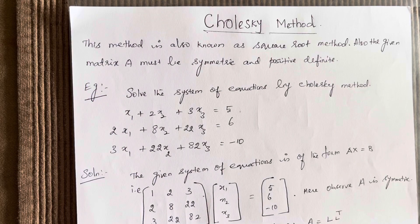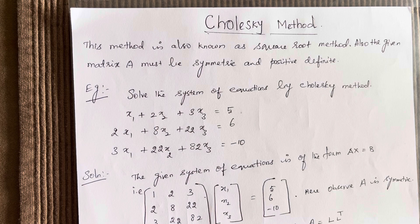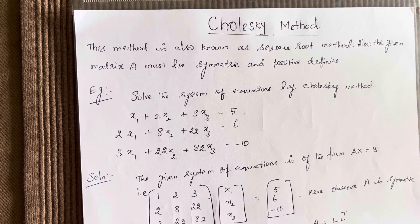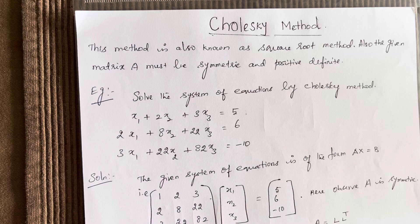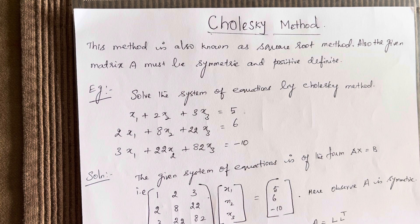Dear students, welcome to my channel. In this video, you are going to see the Cholesky method. When a system of equations is given, we will see how to solve it using the Cholesky method. This method is also known as the square root method. The given matrix A must be symmetric and positive definite.